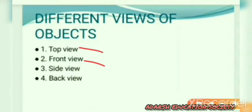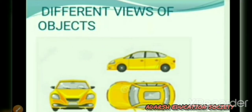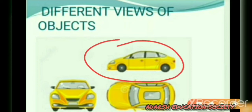Second is the front view. Third is the side view. And fourth is the back view. Now let's see the example of different views of an object. I take a picture of a car. You all can see the picture of the car. First, the side view of the car — we can see two doors and two wheels. This is the side view of the car. Next, the second picture: the front view of the car. We can see the two headlights, two mirrors, and the person sitting inside the car.